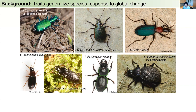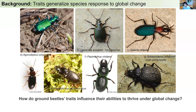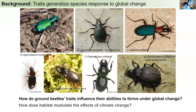Some species have really long legs and are powerful predators like tiger beetles — fast runners that can easily chase down prey. Some species are burrowers and can feed on insects in the soil. Some species can fly or climb trees, pursuing prey in the canopies. Many species have a broad diet, eating not only other insects but also seeds and plants. This study focuses on answering two questions: how do ground beetles' traits influence their ability to thrive under global change, and how does habitat modulate the effect of climate change on ground beetles?